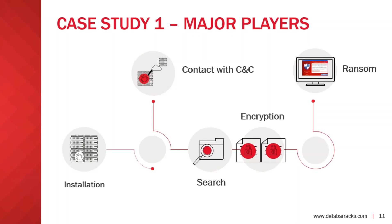Here's how ransomware works: you have an installation of the ransomware, it contacts the command and control server to create the encryption key, then searches across the network as far as it's able, performs the encryption, and then a ransomware screen pops up. At that point you need to either pay the ransom or find a backup of that data. In this case it was about as perfect as it could be: the user contacts IT, IT contacts us, we have a recent backup, we perform the restore, user permissions are all very good so the ransomware hasn't been able to get very far. We bring that data back with next to no data loss and no downtime.